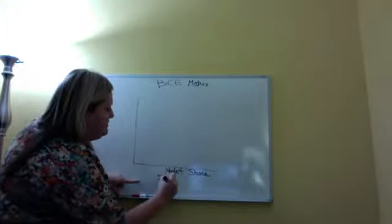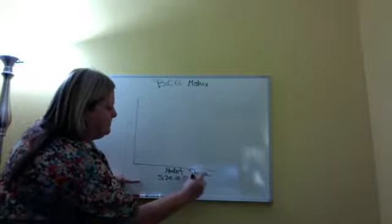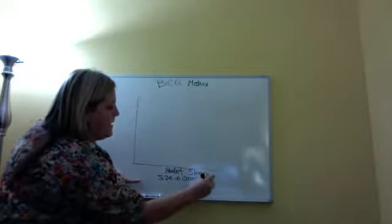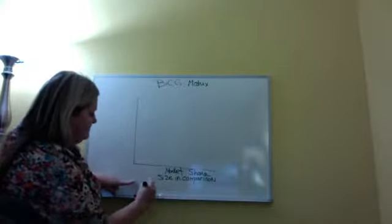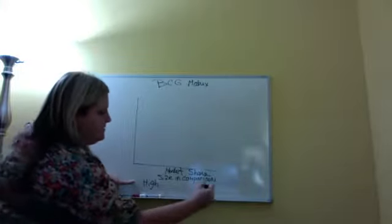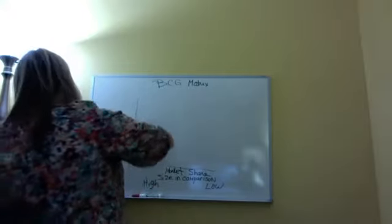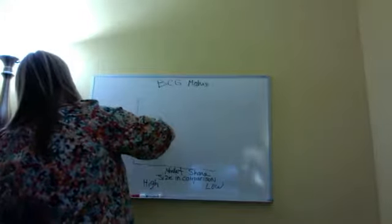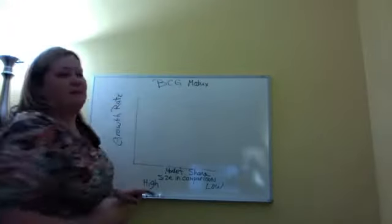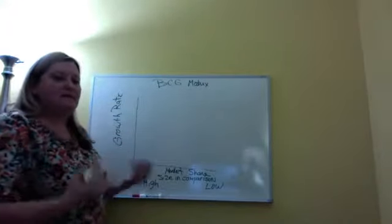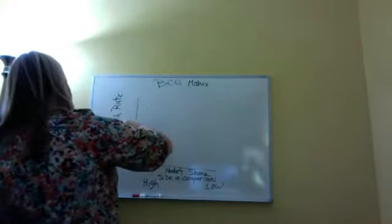So I'm going to put size in comparison. Then for the market share, this is going to be high and this is going to be low. And then on the y-axis, that's where you have the growth rate. Basically what the growth rate means, this is the speed that the industry is increasing, so how fast is the industry growing. So I'm going to put industry speed.